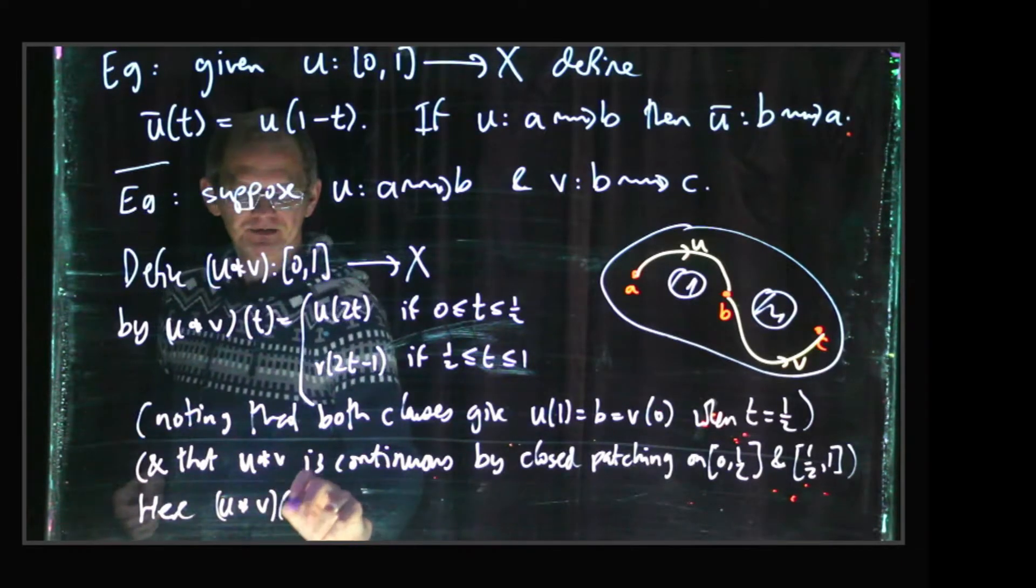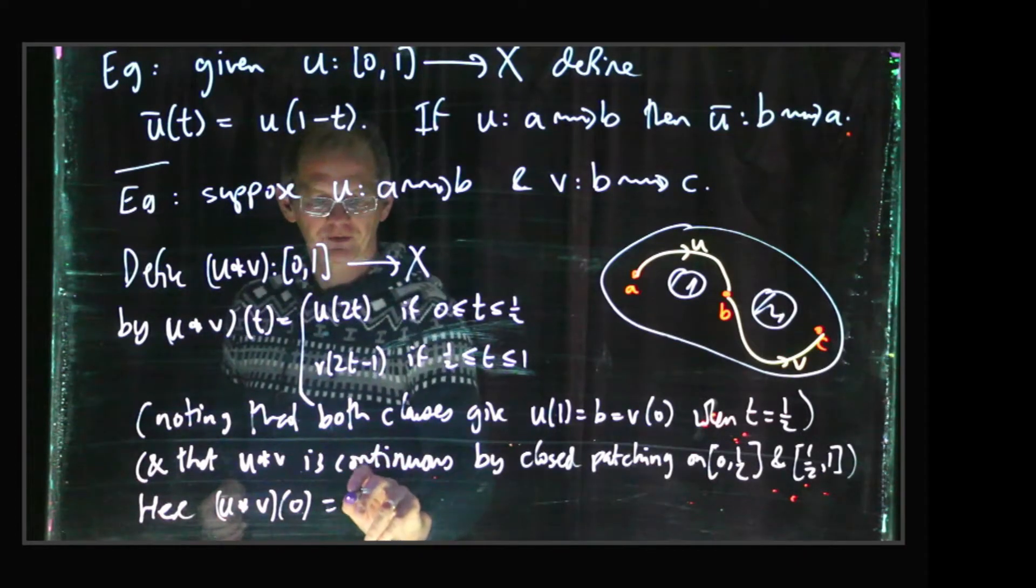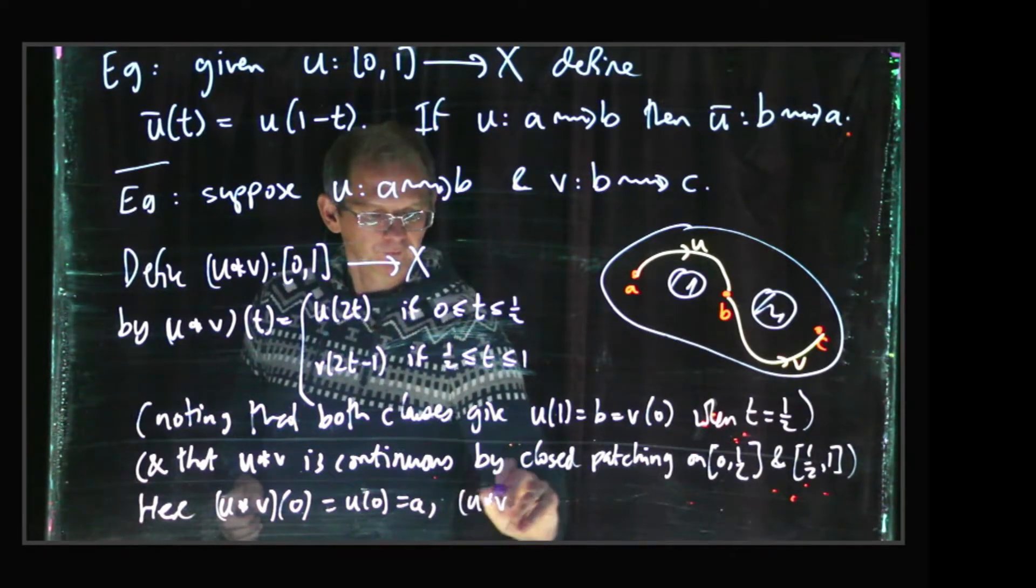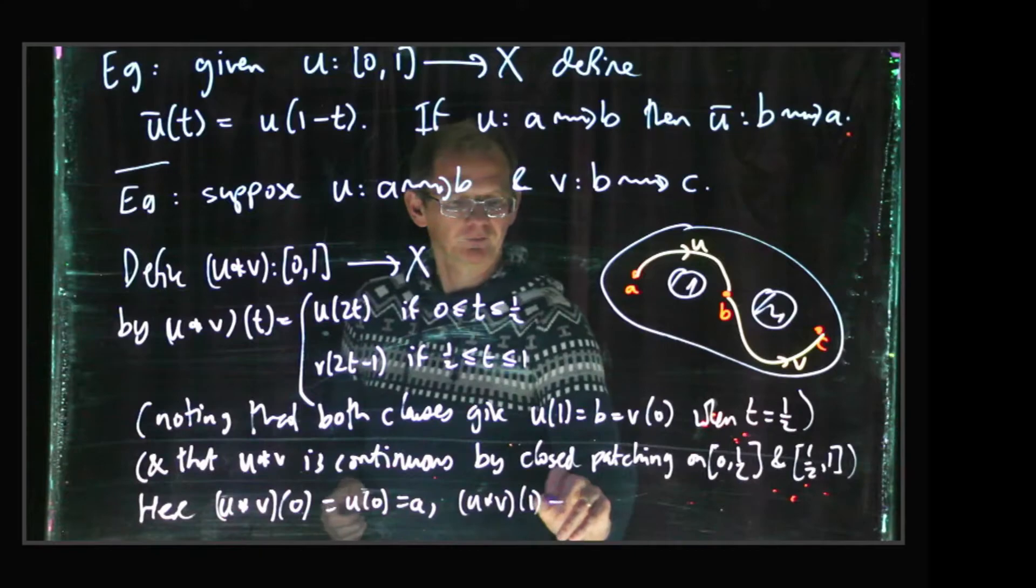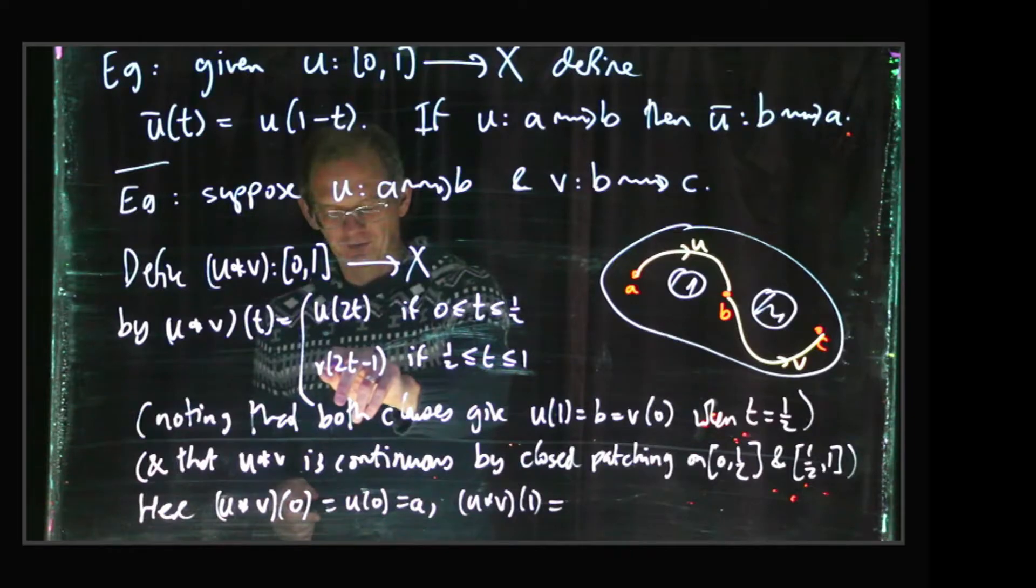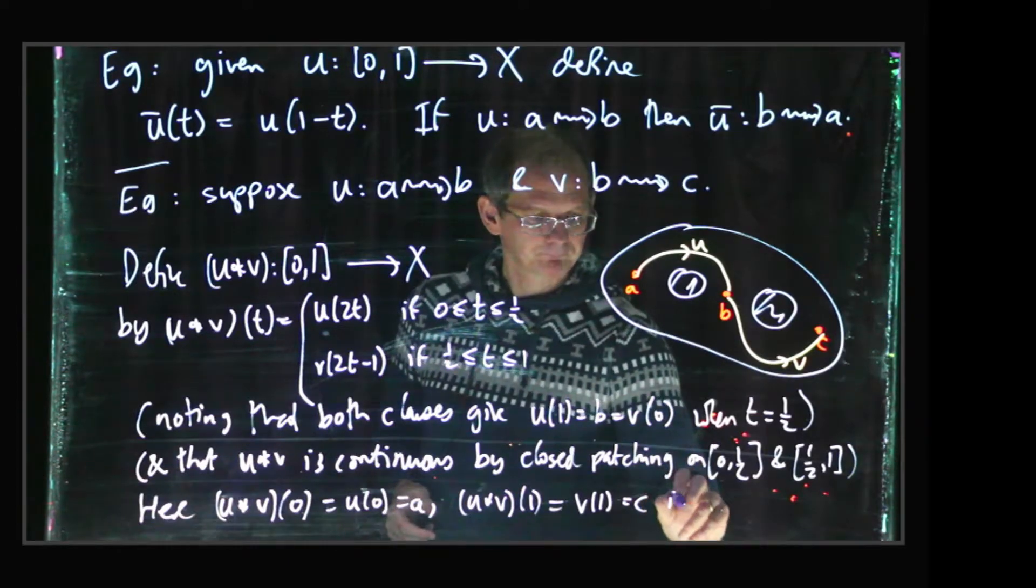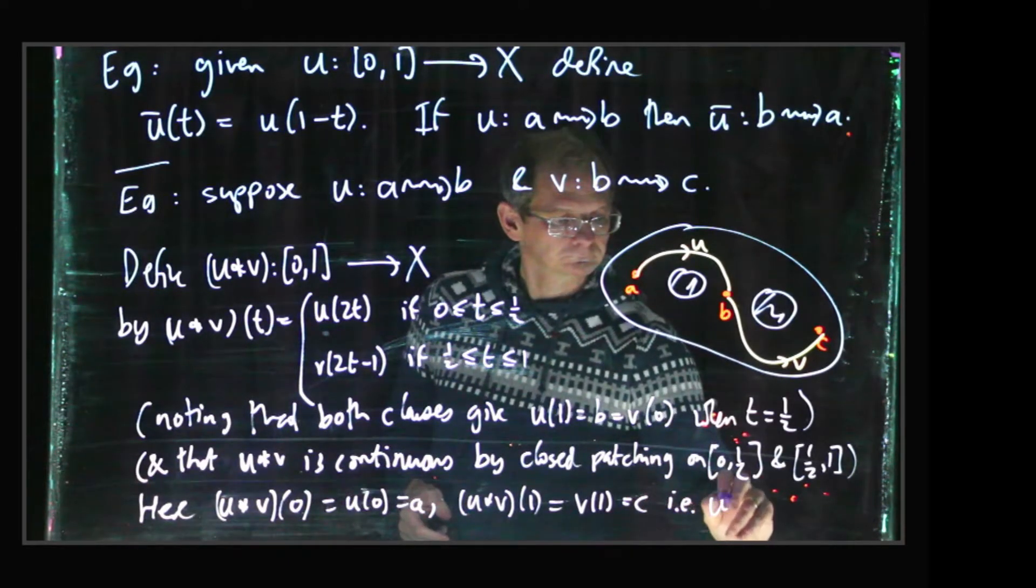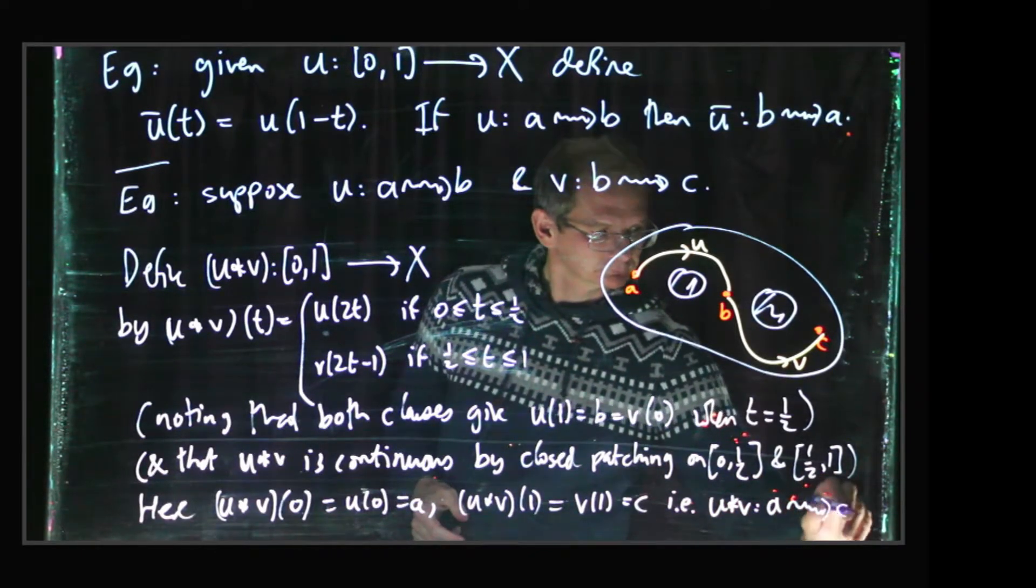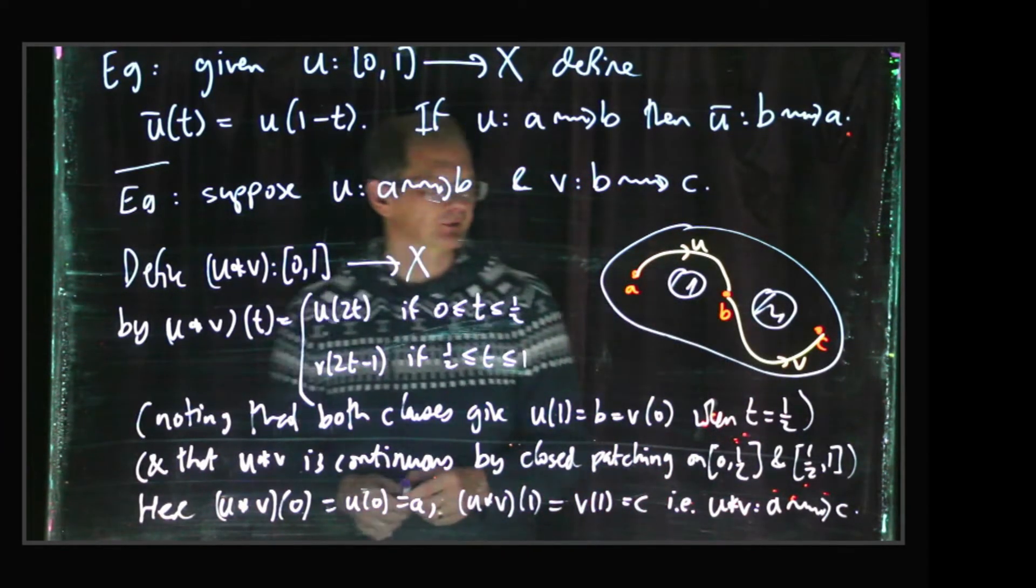And then u star v of 0, well that's, you know, for t is 0, the first clause is operational, you just get u of 0. And whereas u star v of 1, okay, so for t is 1 the second clause is operational, you get v of 2 times 1 minus 1, which is v of 1, which is c. So we're seeing that we've actually got a path from a to c, that's just a mathematical formulation of this picture that we drew here.